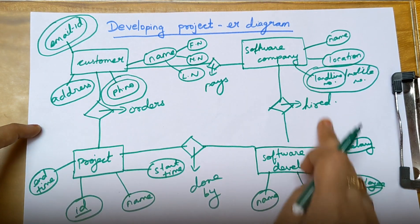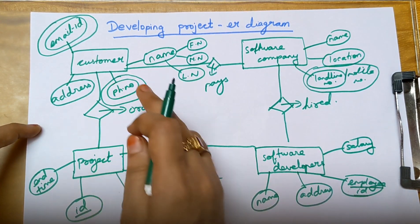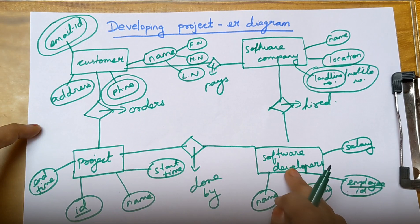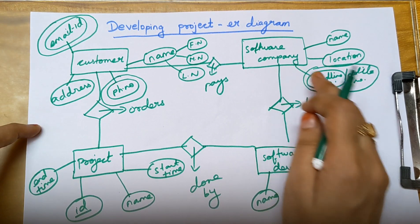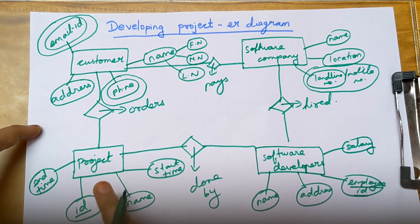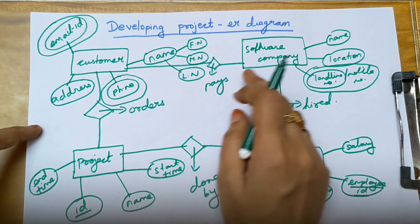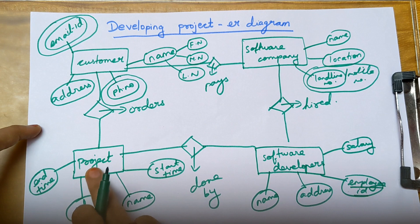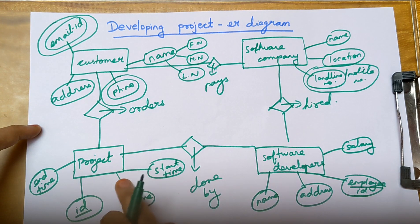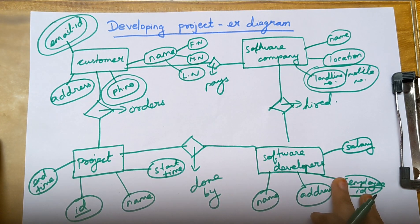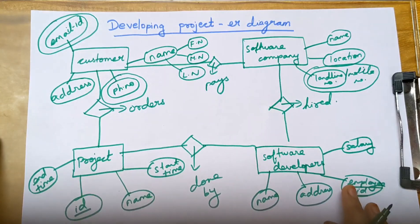So this is the flow for drawing the ER diagram for developing a project: the customer orders the project, the project is done by the software developer, the company hires the software developers to do the project, and then the customer pays to the software company for completing and delivering the project successfully.